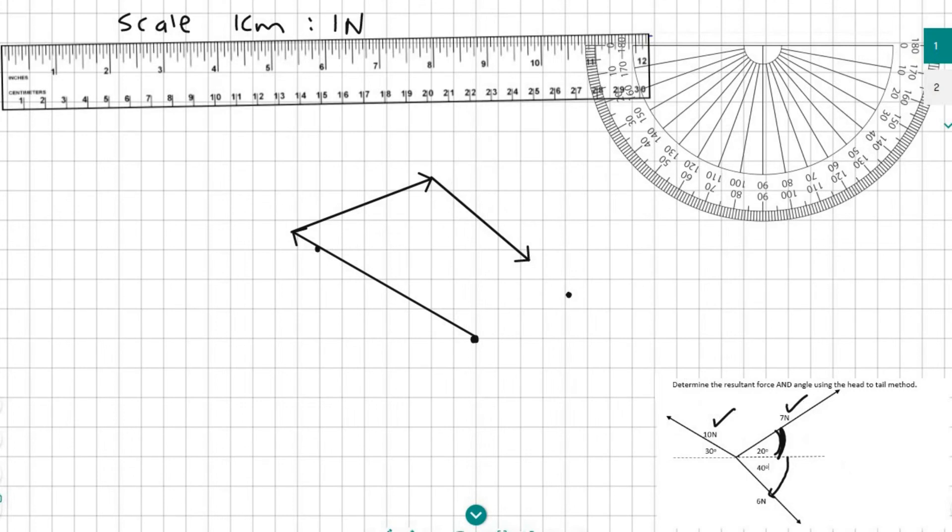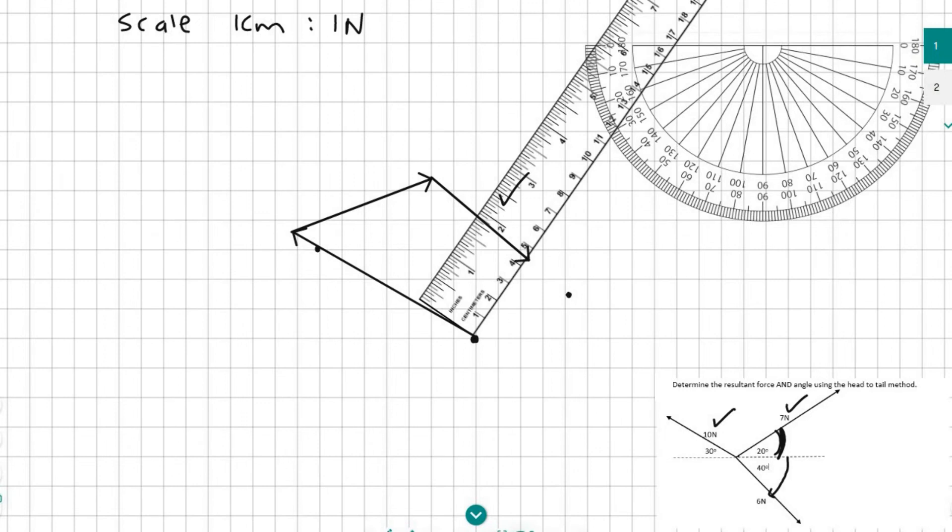Now that I have drawn all of the lines, in order to determine the resultant I need to go all the way back to the beginning, this point over here. And I'm going to need to connect a line going from that point to the very end, which is where we just finished off over here. And if you had to connect that you get an answer of around about, I would say that's around four and a half centimeters.